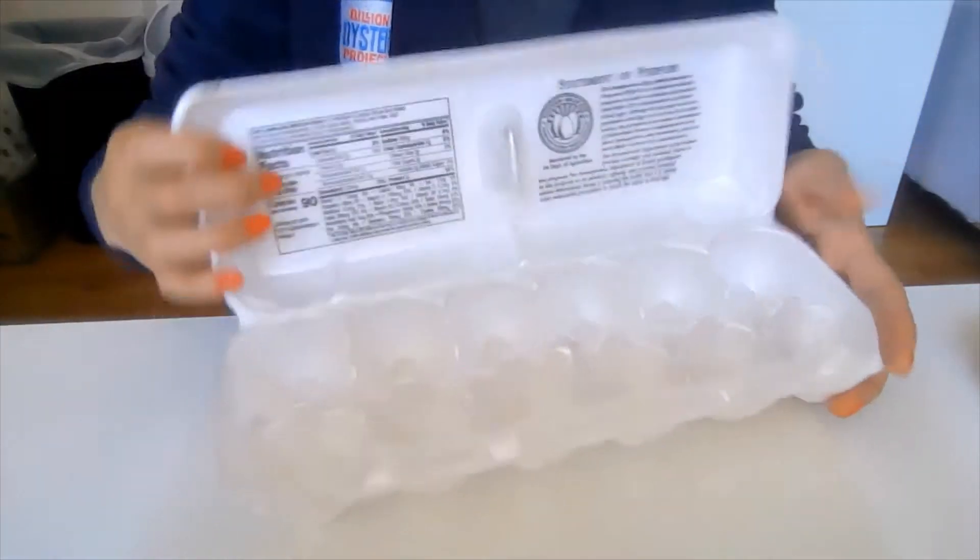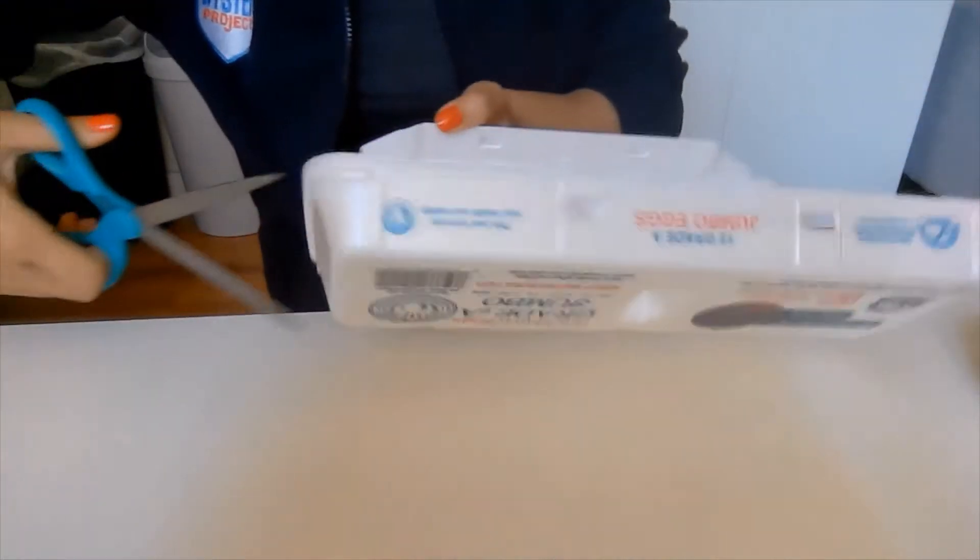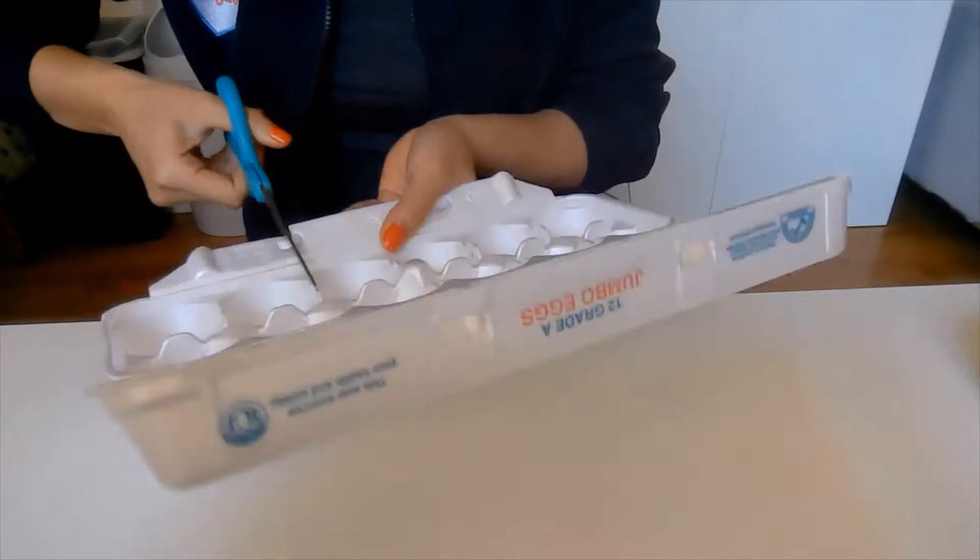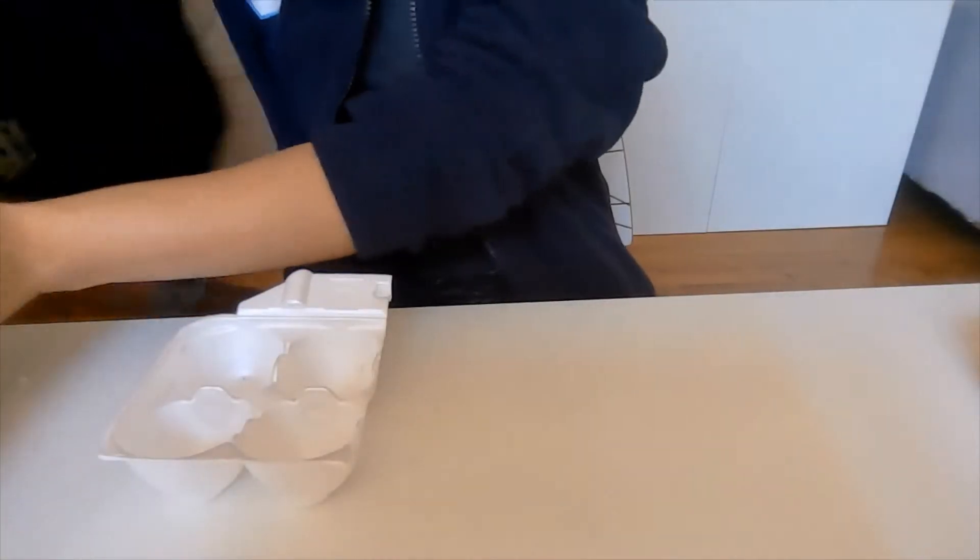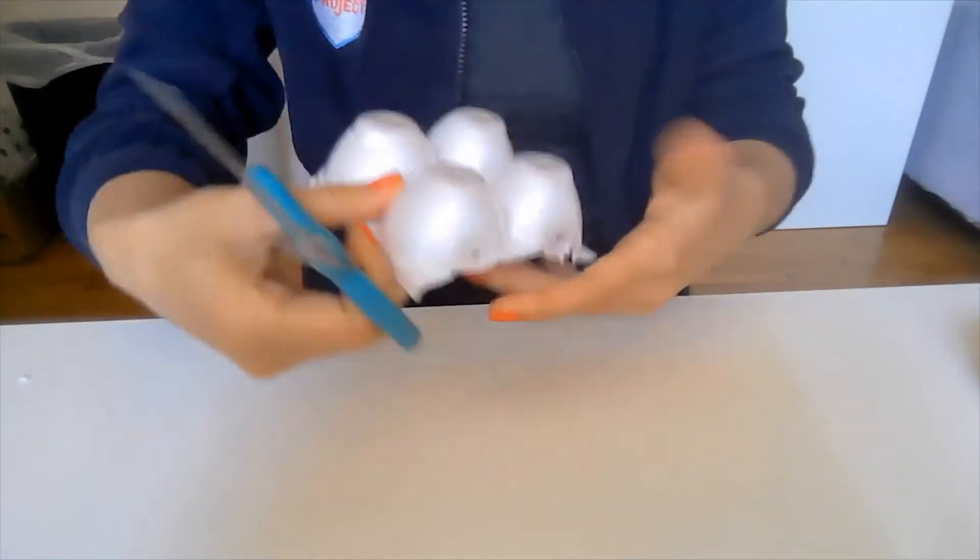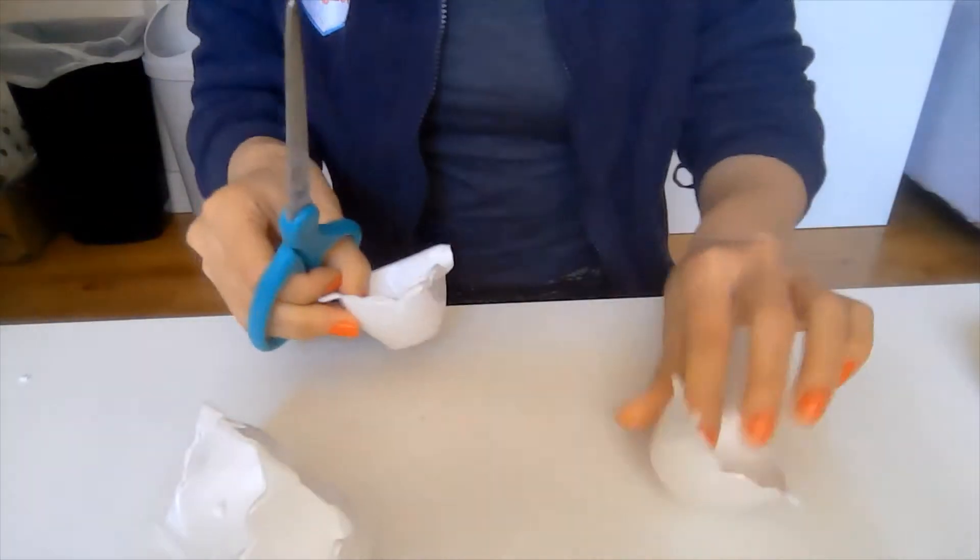The first step to making your own anemometer is taking your egg carton and cutting out four of the cups. You don't have to use a styrofoam egg carton. In fact, I would recommend against it since styrofoam is one of the major polluters of New York City waterways. However, because these are extraordinary times, I could only find eggs in styrofoam cartons at my neighborhood grocery store.